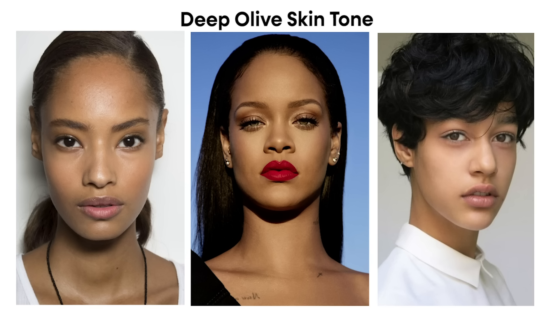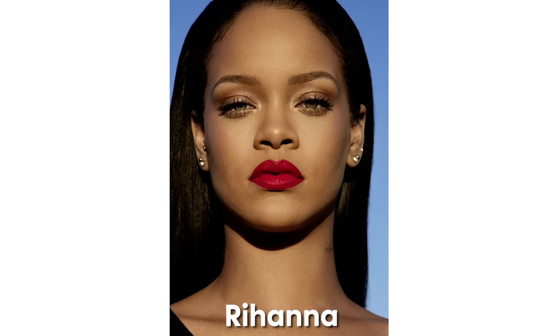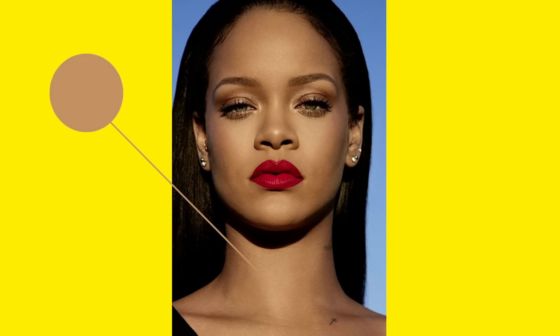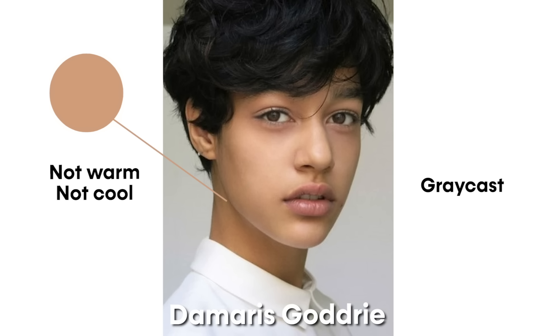For deep olive undertones, the first example has quite warm skin. For the cooler side, Rihanna is the example — in the midtones on her face, you can pick out a slight green cast. Compared to a bright yellow, it appears a little gray, and there are still some pinkish tones. For neutral deep olive undertones, the last example has almost a gray cast with no obvious color temperature one way or the other.